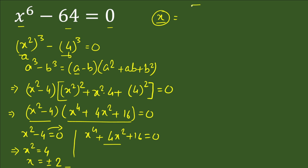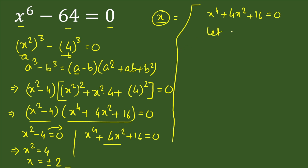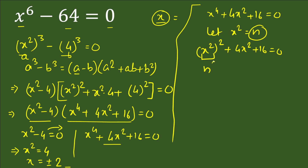Now we solve x⁴ plus 4x² plus 16 equals 0 for the remaining values. We let n = x², so the equation becomes n² plus 4n plus 16 equals 0, which is a standard quadratic equation.